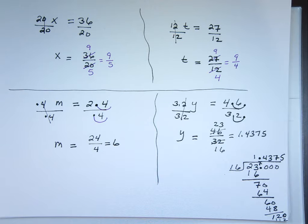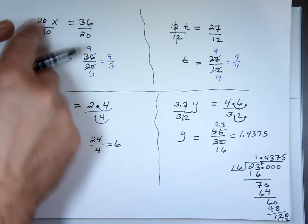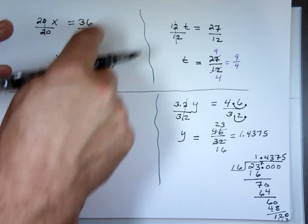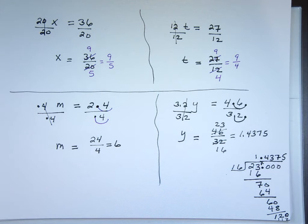So notice the process didn't change. If you're multiplying that number, you're always going to divide by that number. Always. So with that in mind, let's bring in chapter 2 again. Fractions. Oh, I heard that.